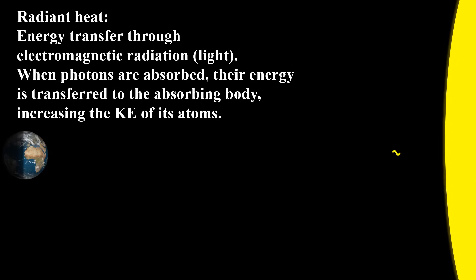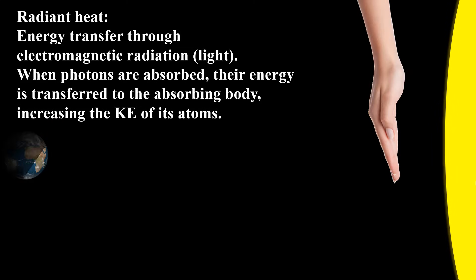Radiant heat is energy transfer through electromagnetic radiation, which is light. When photons are absorbed, their energy is transferred to the absorbing body, increasing the kinetic energy of its atoms. And of course, we can't miss this opportunity to show a partial dextro eclipse.